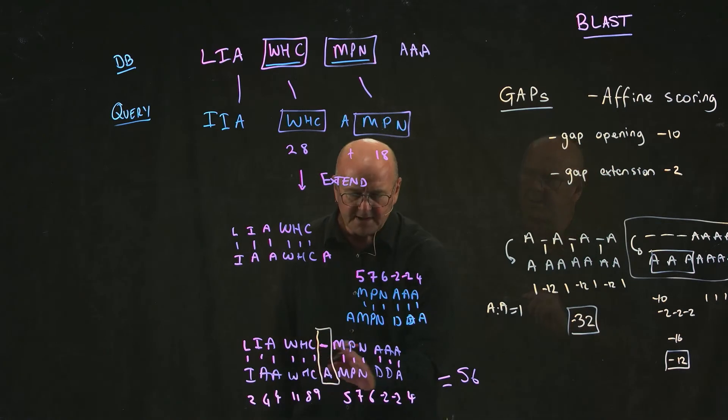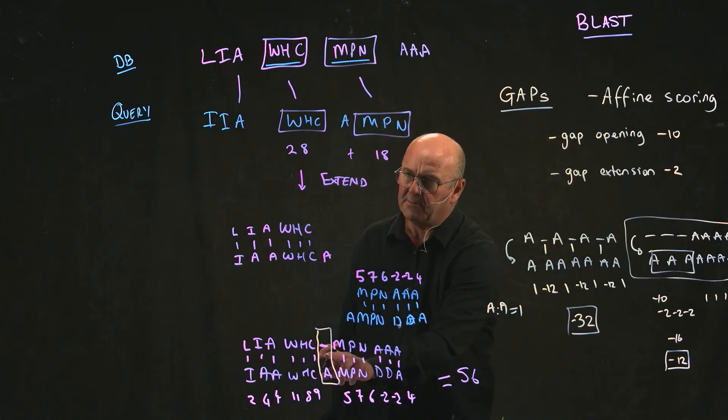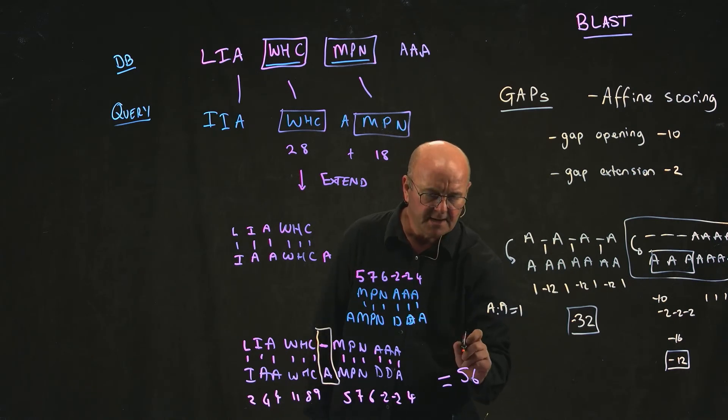So we've got a raw score of 56, but we've got one gap here. And if we use a minus 10 minus 2 penalty, then our final score would be 44.